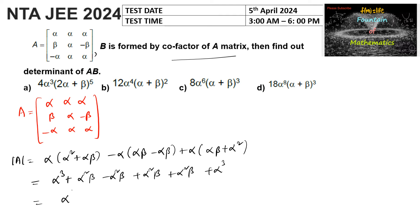So we can write here alpha cubed. That is alpha cubed plus alpha cubed, which is 2·alpha cubed, plus alpha²·beta taken common gives 2·alpha²·beta. Taking 2·alpha² as common factor, we can say det(A) equals 2·alpha squared times (alpha plus beta).